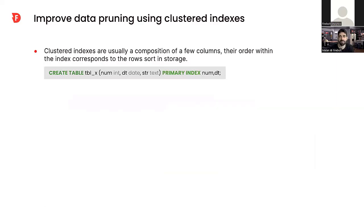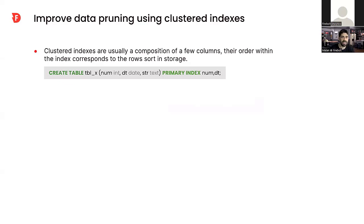Let's talk about a real example of how we could define a clustered index, and most importantly, how we choose the specific index that will be right for our use case. The term 'clustered index' comes from vendors like Snowflake. Every vendor calls it slightly differently — in Firebolt we call it a primary index, in Redshift it's called a sorted index — but the concept is the same. Here's a quick example of how we create a table with a primary index in Firebolt.